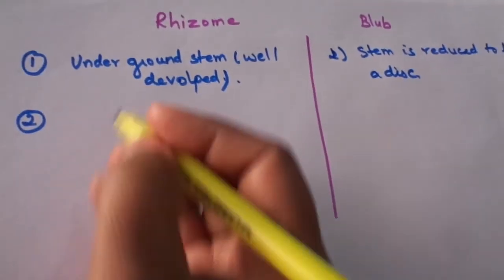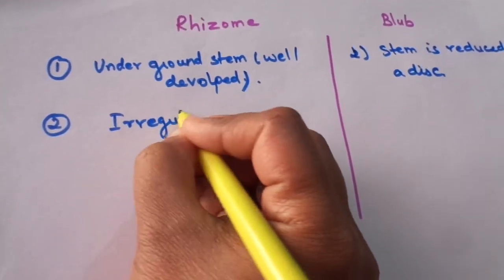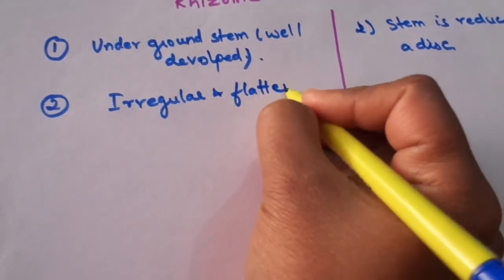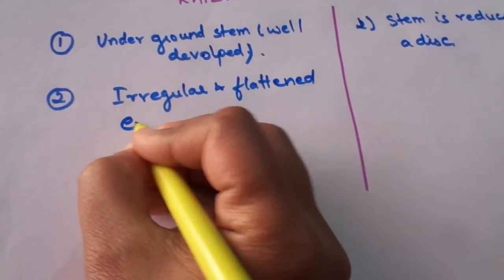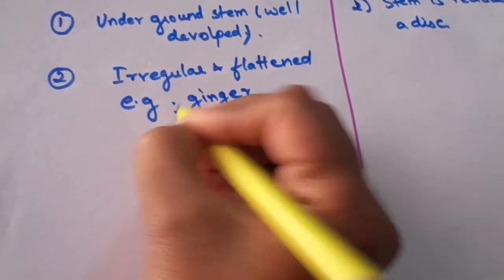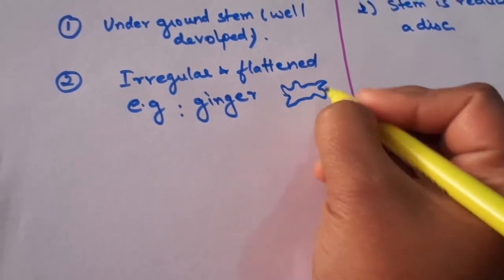The rhizome, the shape of the rhizome is irregular and flattened. And the example is ginger. We all know how this ginger looks like. It is a flattened piece that is of irregular shape.